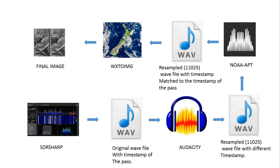The NOAA-APT application is capable of decoding images, but it does not have the features of overlay maps and false colors. However, it does have a feature where it can copy a timestamp from a particular audio file and write it to some other audio file, and that's what we are going to do. We are going to copy the timestamp from the original wave file and write it to the resampled wave file which was the output of Audacity software. The output file will be a resampled wave file with sampling rate of 11025 with a timestamp that matches the timestamp of the pass.